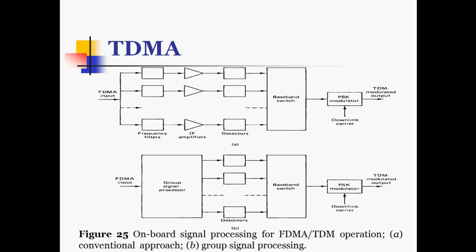The on-board signal processing diagram shows two approaches. In the conventional approach, FDMA input is given to frequency filters, IF amplifiers, and detectors, then to a baseband switch, after which BPSK modulation is performed with a downlink carrier to produce TDM modulated output — each signal processed individually. In the group signaling approach, a group signal processor is used with individual detectors, offering an advantageous group signaling process.